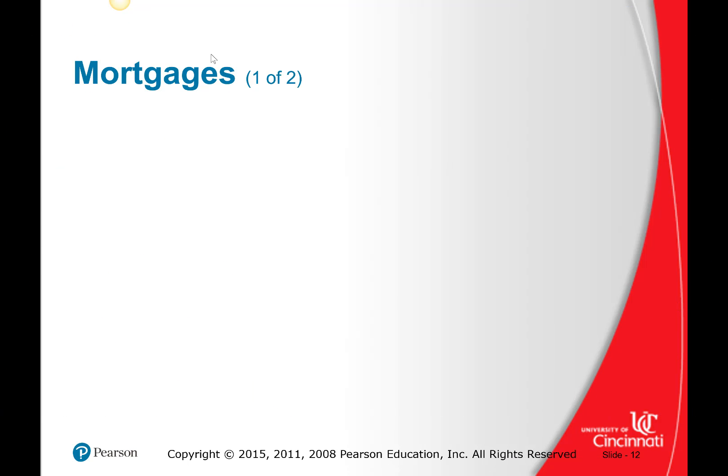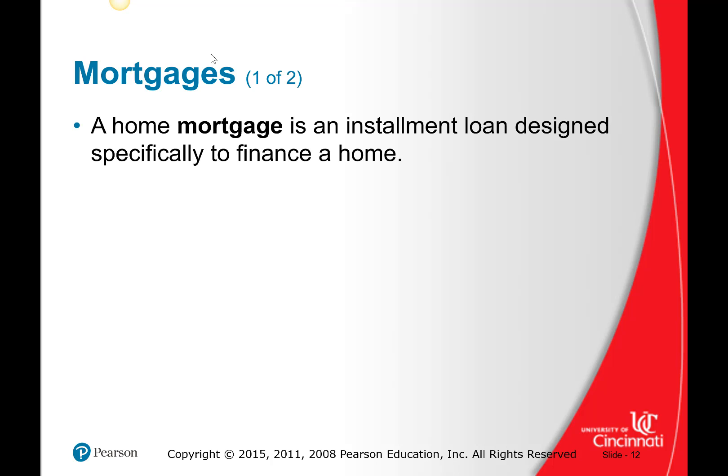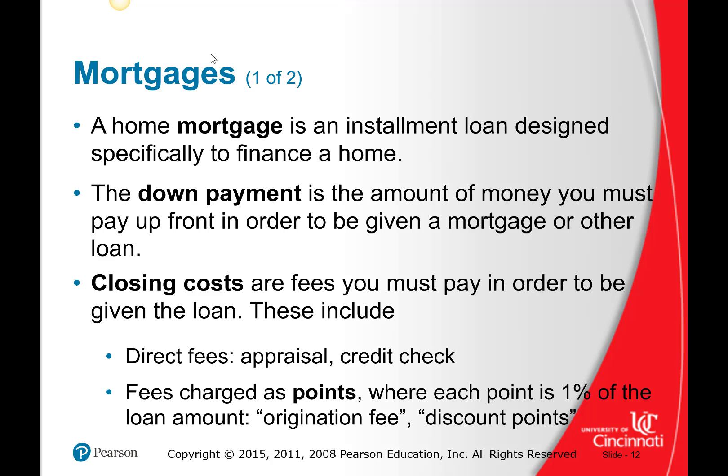With regard to mortgages, we already talked about the fact that a mortgage is an installment loan. What does it mean to be an installment loan? It's the same payment every month. Credit cards are not an installment loan because you can vary the amount you pay each month. We talked about the fact that you need a down payment.